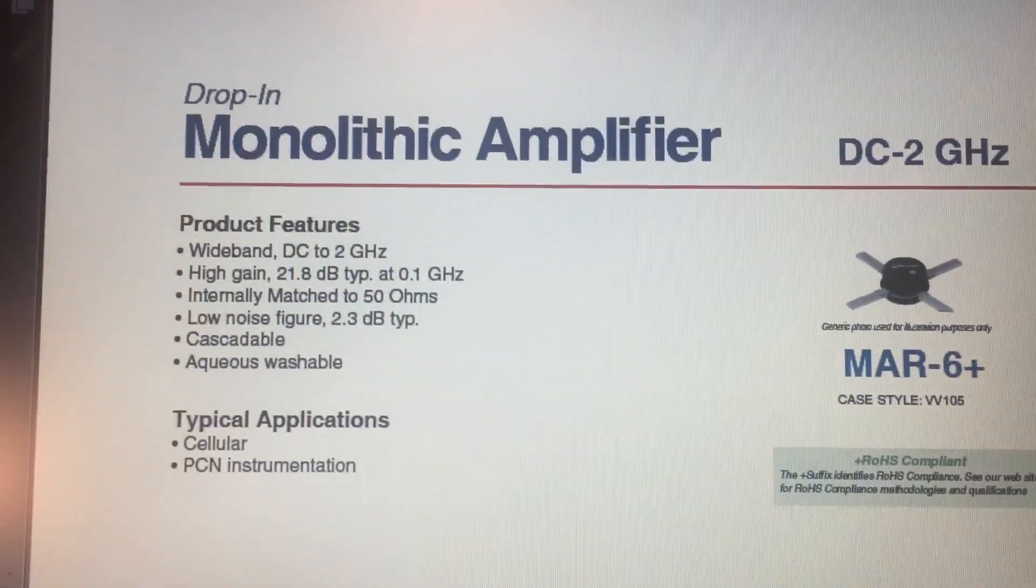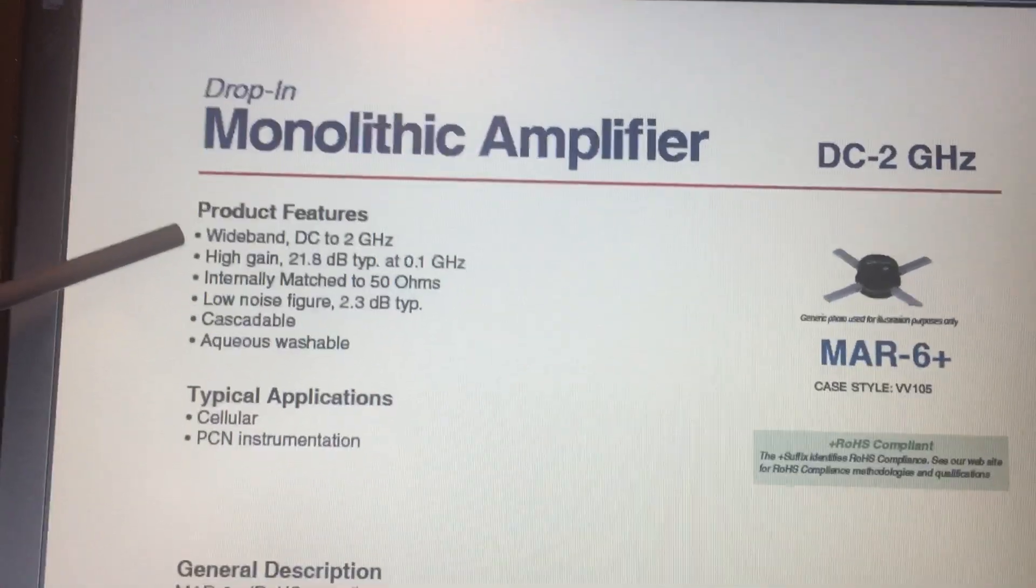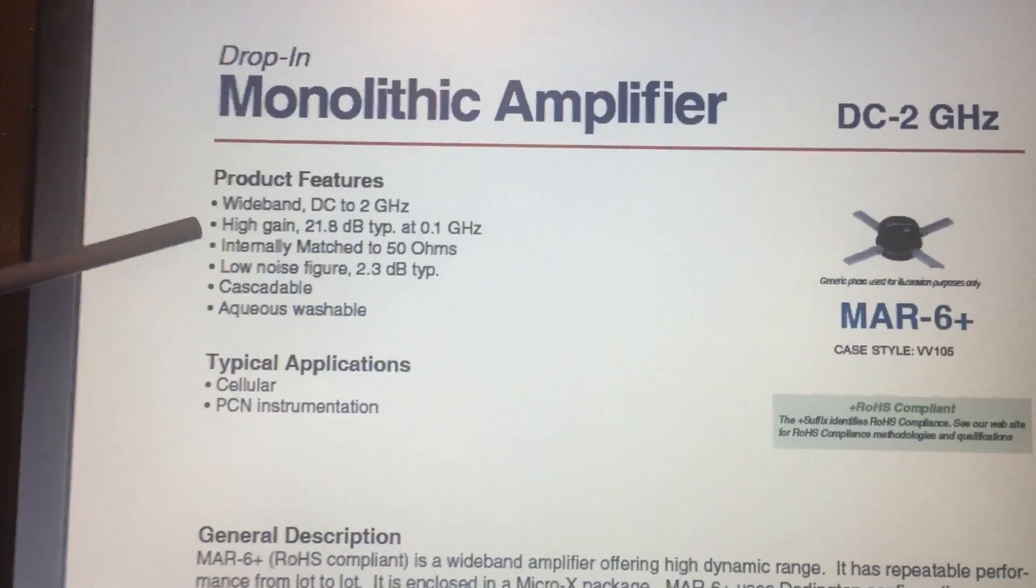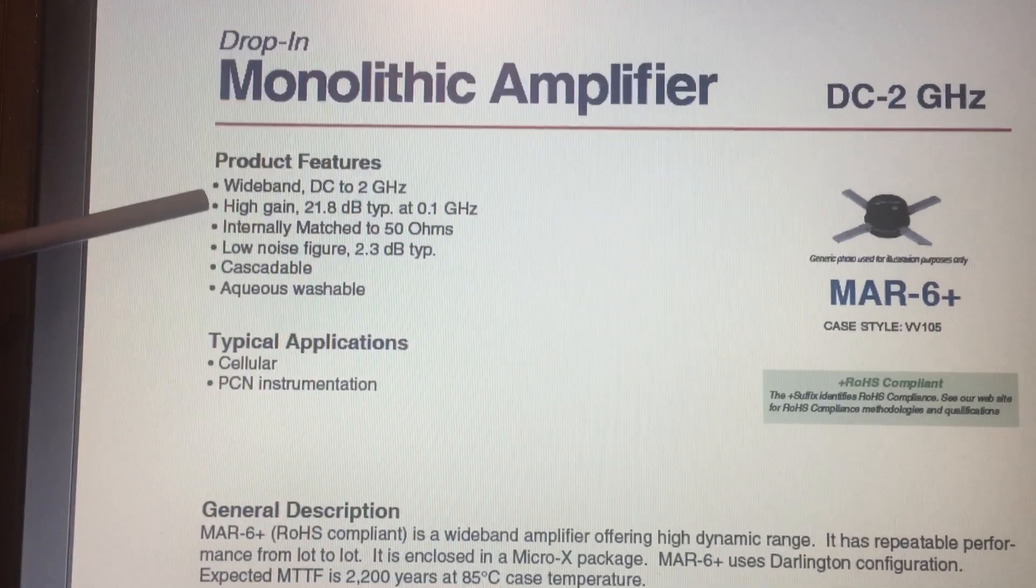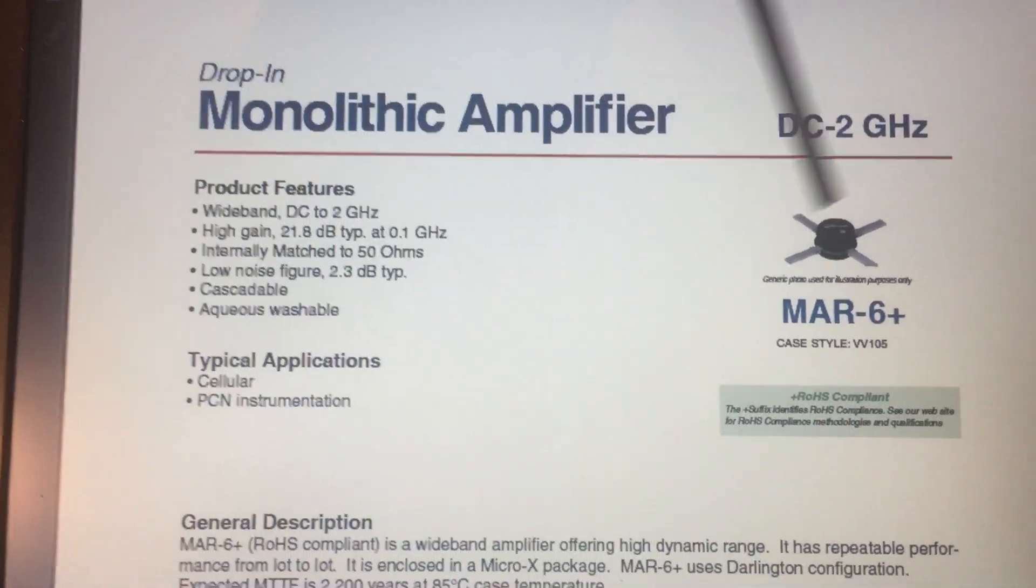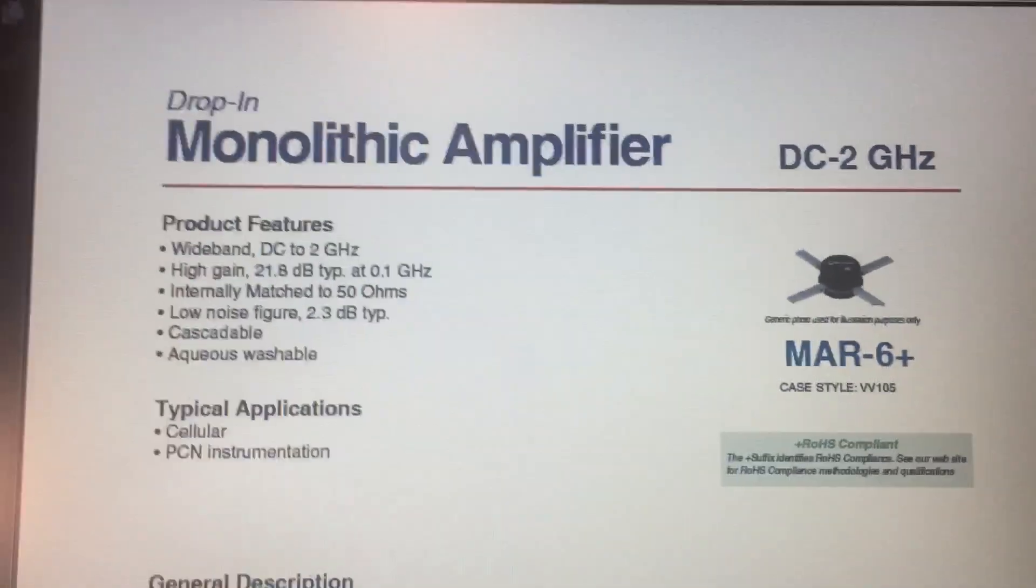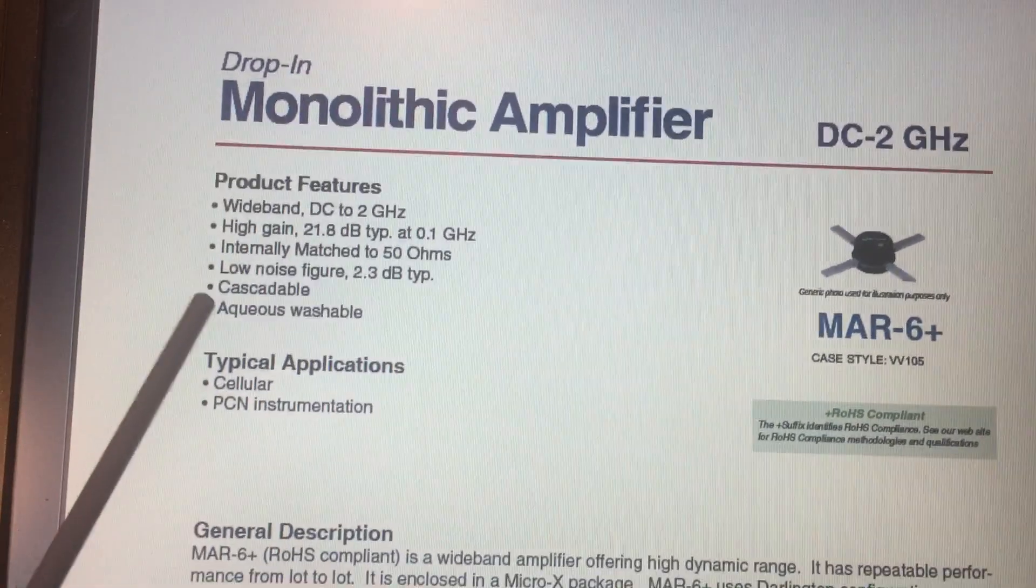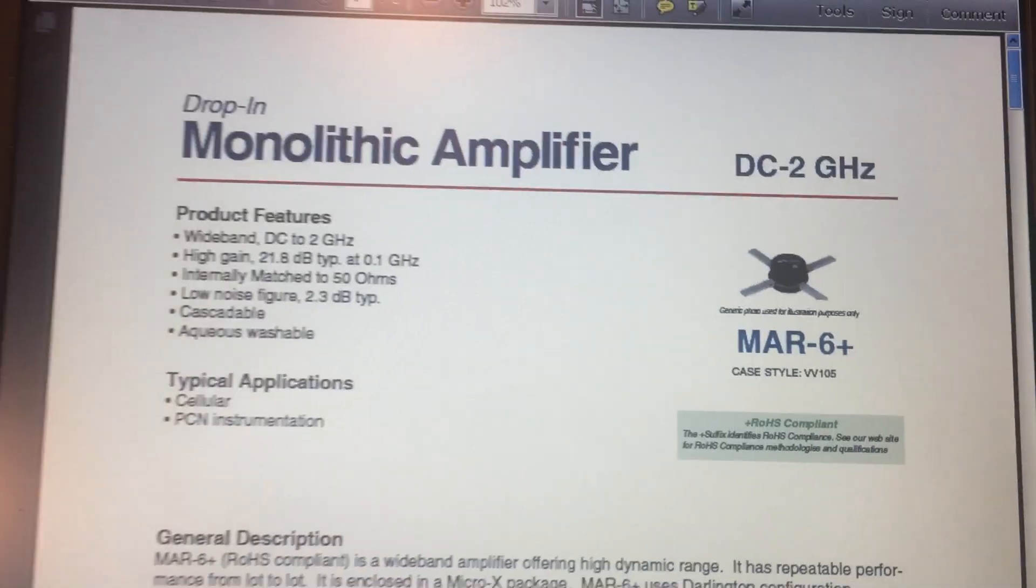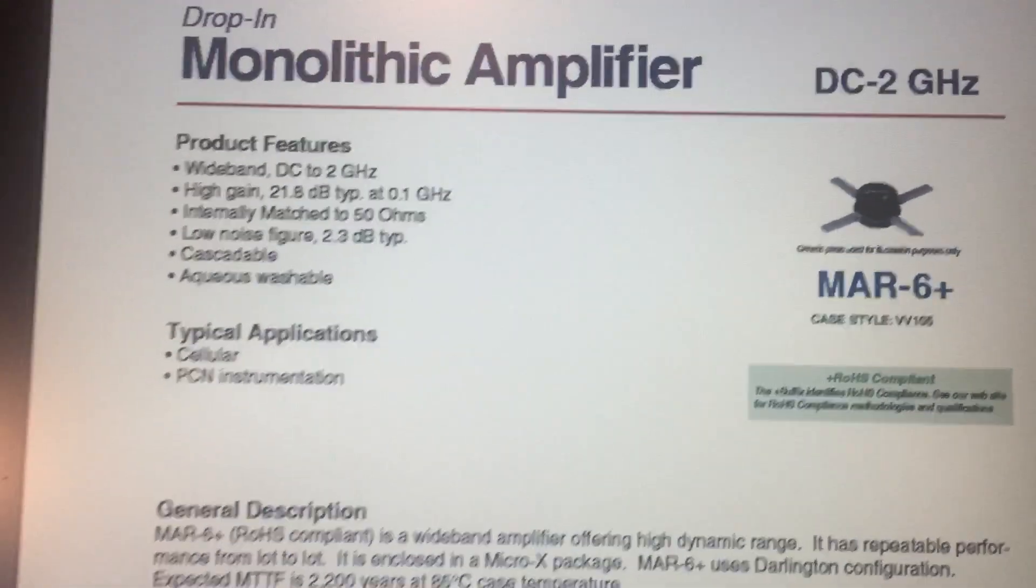This is the data sheet for the device. As I said, it's a monolithic amplifier. If we look at some of the features, it works from DC to 2 gigahertz, so there's plenty of bandwidth here. It has a high gain, 21.8 dB. What I like about these devices is they're all internally matched, so they're matched 50 ohms on the input and 50 ohms on the output. The noise figure is very good for this technology, and these are cascadable. I can use two or three or even more of these devices and cascade them together for increasing the gain. The nice thing is they're already matched to 50 ohms so you don't have to worry about any impedance matching between stages.